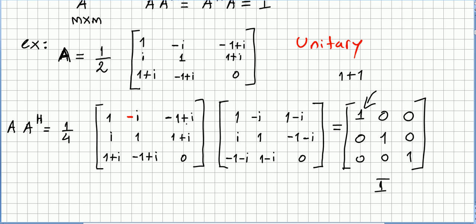and minus 1 plus i times minus 1 minus i, that is obviously 2, plus 2. So that's 2 plus 1 plus 1 plus 1, that's 4. Dividing by these 4 here we get 1, and we can check the other entries.